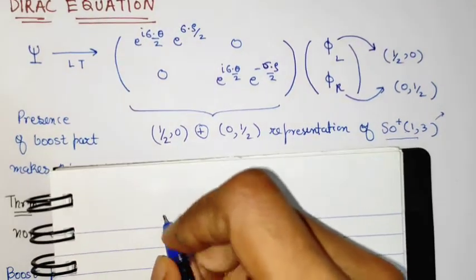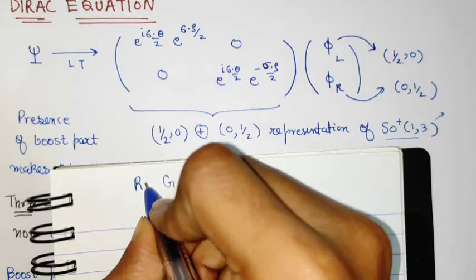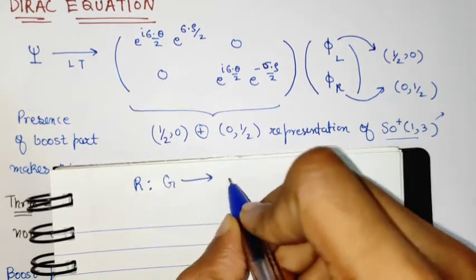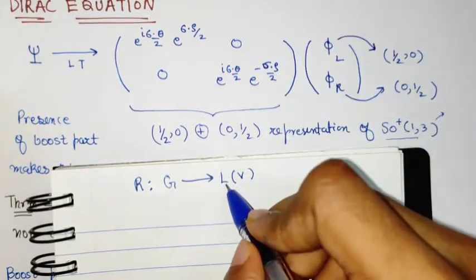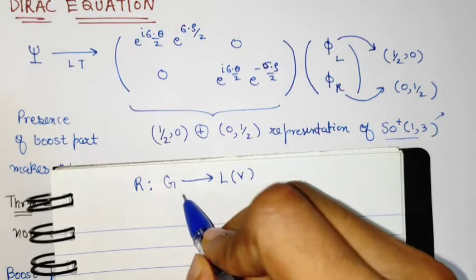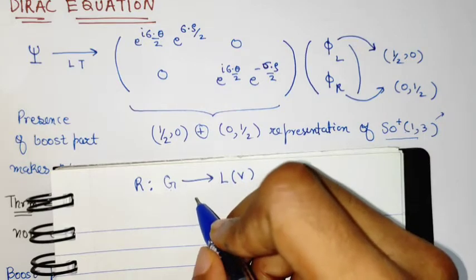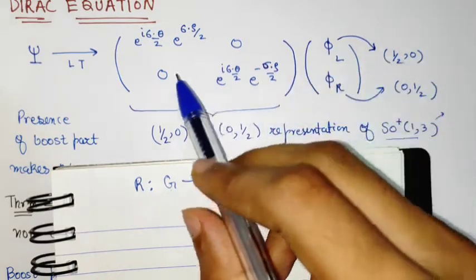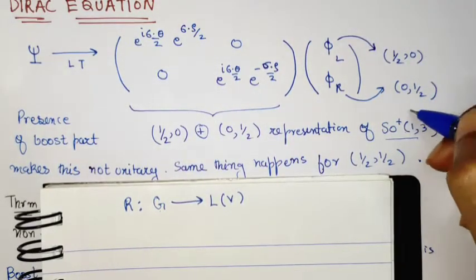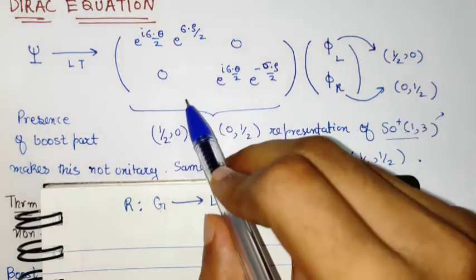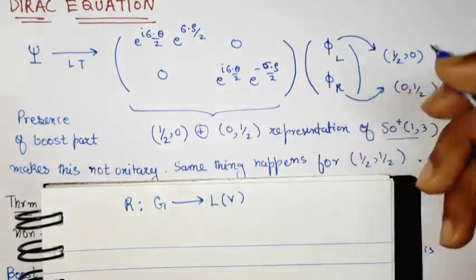By representation, what I mean is that given a group G, you can take a mapping — called the representation — that maps to some linear operator over a vector space. You can think of it like attaching to a group element some sort of a matrix element. This matrix is associated with the representation of the group and it acts on a particular vector as a linear operator.